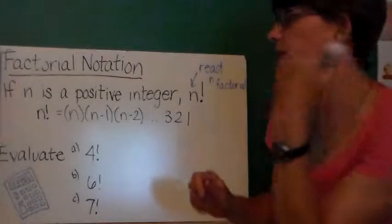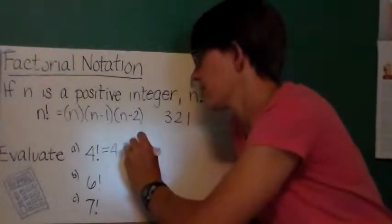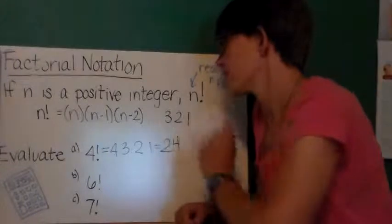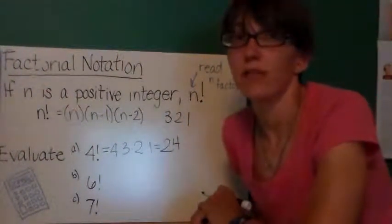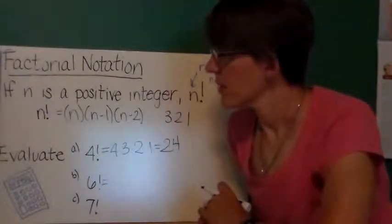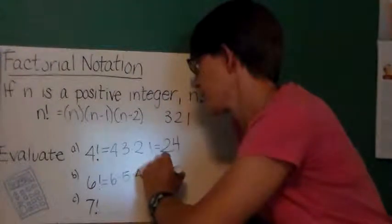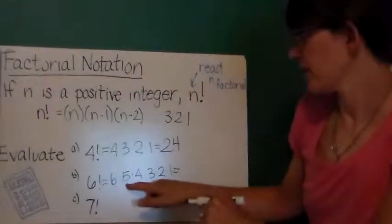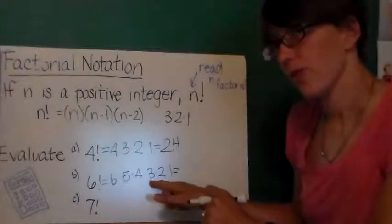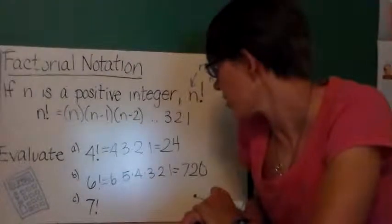So we're going to evaluate 4 factorial. So I start with 4, and I keep subtracting. Okay, 4 minus 1 is 3, then 2, then 1, got to one, stop. And do 4 times 3 times 2 times 1. That is 24. So 4 factorial equals 24. 6 factorial. So 6 factorial is going to be 6 times 5 times 4 times 3 times 2 times 1. Okay, so 30 times 4 is 120 times 3 is... So 6 factorial is 720. That's a big difference.